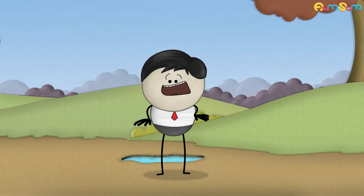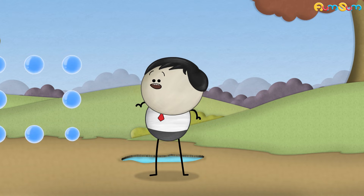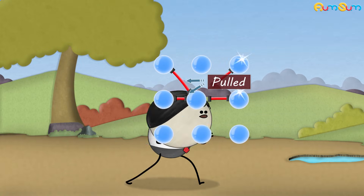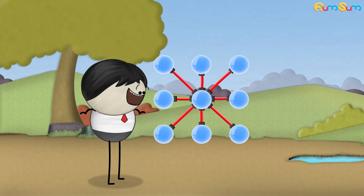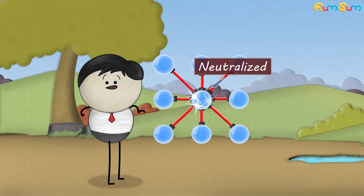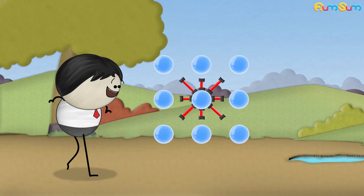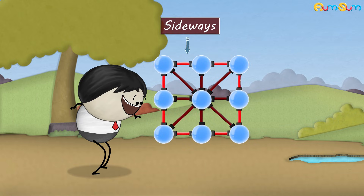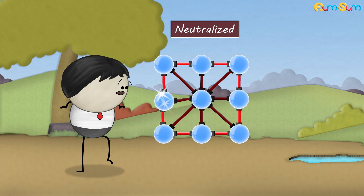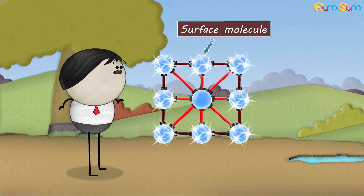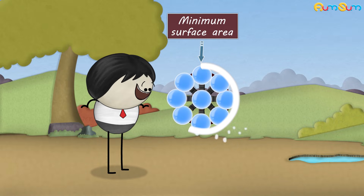Alright, I'll explain. Inside a drop, each water molecule is pulled with a force by its neighboring molecules. As these forces are equal and opposite, they get neutralized. However, the molecule present at the surface is not attracted outwards — it is attracted only inwards and sideways. Sideways forces get neutralized, but because of the inward force, each surface molecule contracts to form a shape with minimum surface area, which is a sphere.